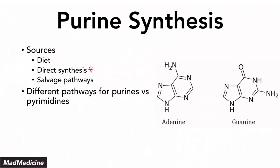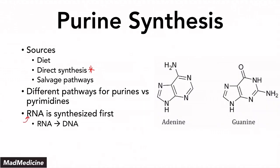There are different pathways for purines and pyrimidines — we're going to be discussing pyrimidine synthesis in an upcoming lecture. Keep in mind they do share similar substrates and have similarities between them. Also remember that RNA is always synthesized first, and then it's going to be converted into DNA.